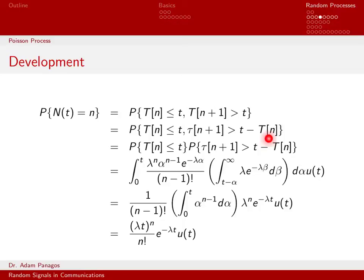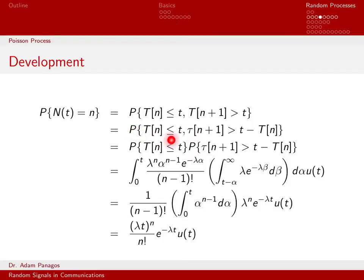Now look at this computation: we have the probability of one random variable being less than or equal to t, and the probability of another being greater than some quantity. Since T_n and tau_{n+1} are independent of each other, we can split the joint probability into the product of two separate probabilities. That's what happens on line three — this becomes two distinct terms.